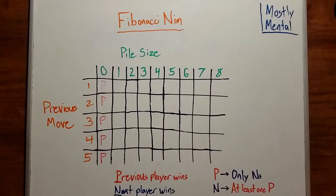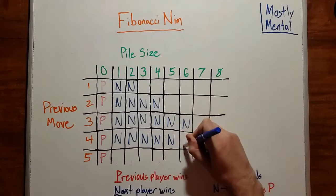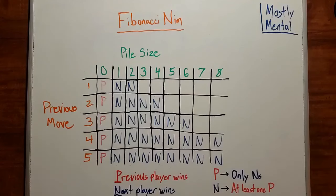Also notice that if the size of the pile is at most twice the previous move, then the next player can immediately take all the ducks and win. We call positions like those N positions. Okay, then how do we fill in all the rest? As we've seen in past videos, a position is a P position if a player can only move from that position to N positions. And a position is an N position if the player can move to at least one P position.